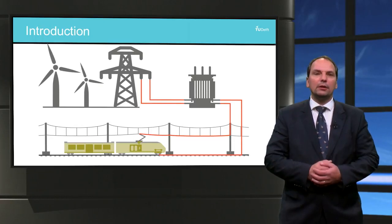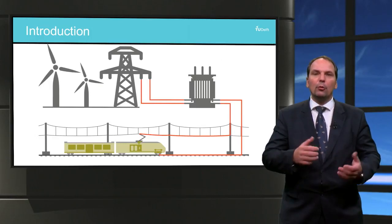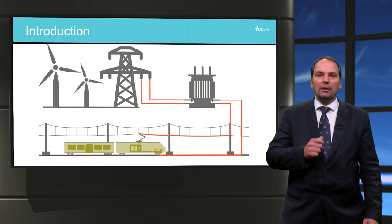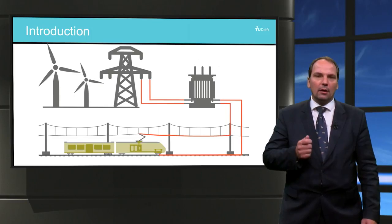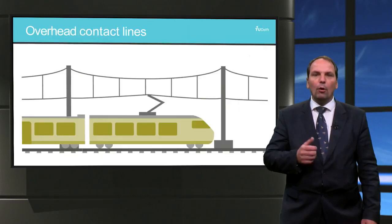In electrified railway systems, a distribution grid transfers energy from stationary substations to moving trains. Typically this is done by either a conductor rail at ground level or overhead contact lines. In almost all designs of overhead contact lines in the world,